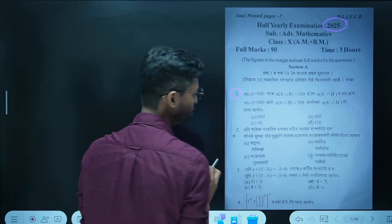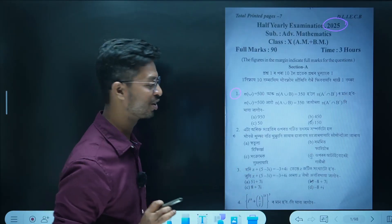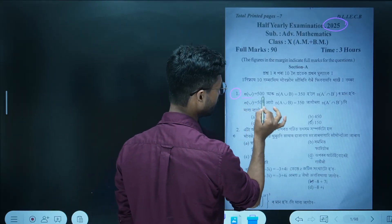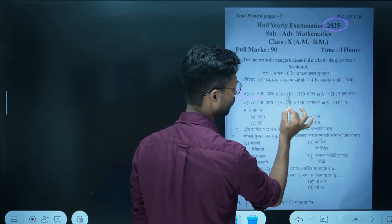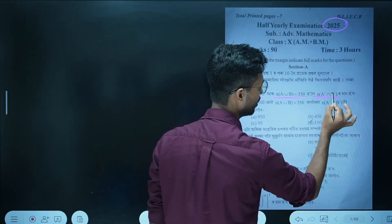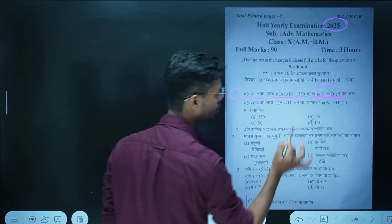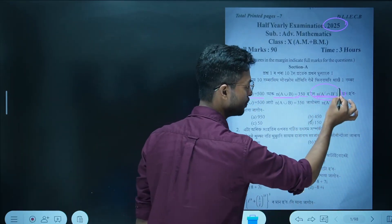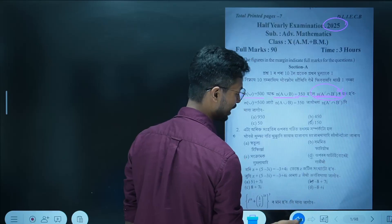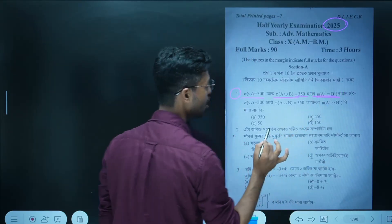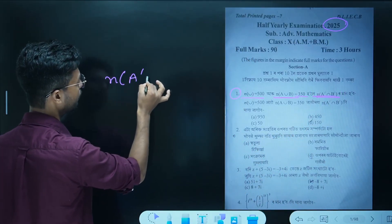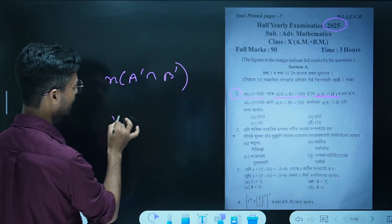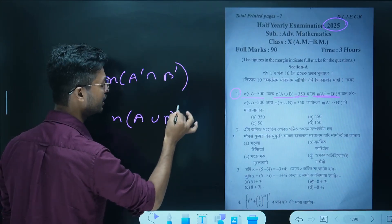Okay, the first question. The first question is N of your value 500, N of A union value. You have to ask them to direct formula. If you see that complement, complement is included. But what kind of complement is it? So we'll see it: N of A complement, intersection B complement. We don't have to say that. A union B.